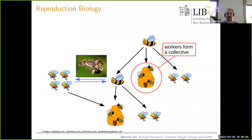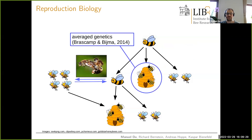Another challenge is that the worker group is not one individual with one set of genetics, but a collective of several thousands of individuals, each with an independent genetic setup. This was solved by Kim Birnaskamp and Peter Beimer in 2014, who introduced the notion of average genetics for the worker group. The worker group is seen as one entity, and its genetics is declared to be the average of the genetics of all individual workers.